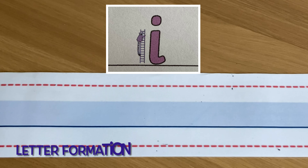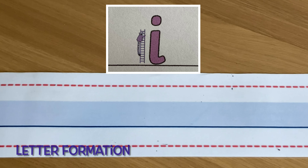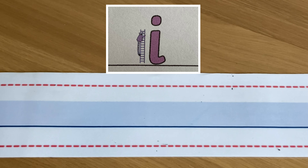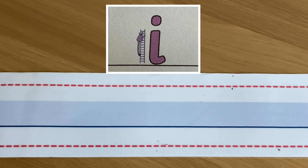We're now going to look at letter formation. The letter I belongs to the long ladder family. This helps us so we know what direction we are going to write the letter I.